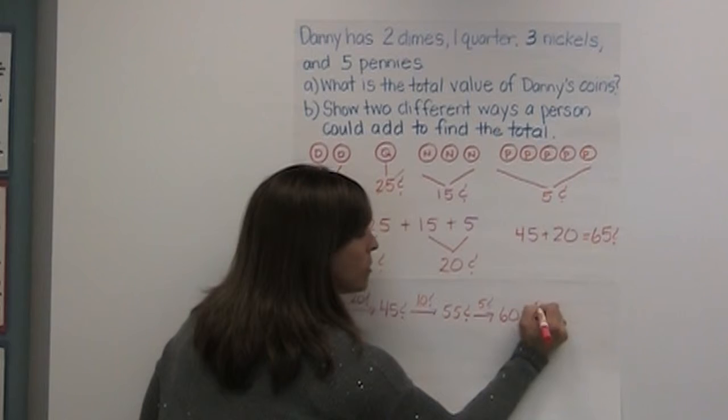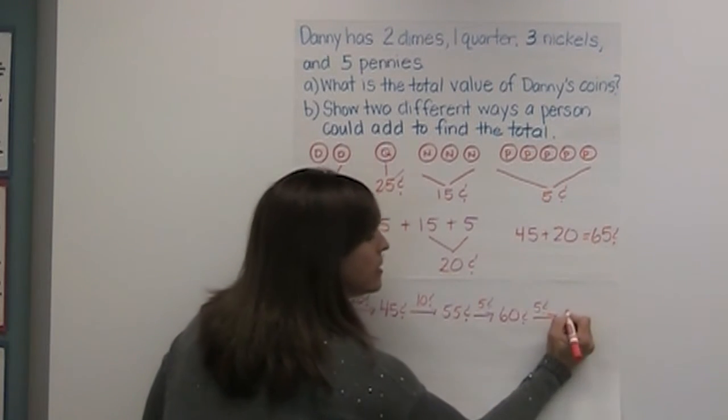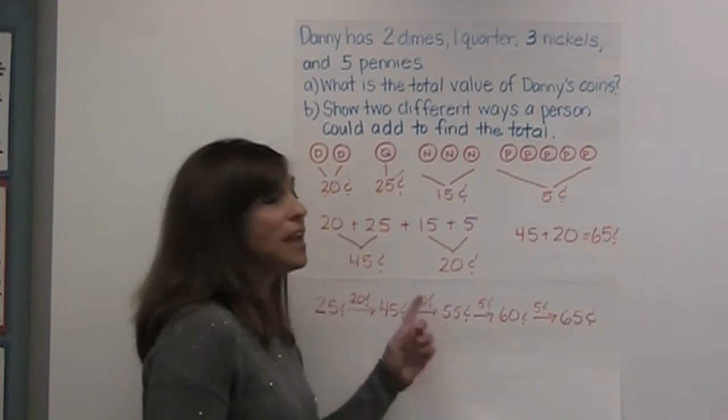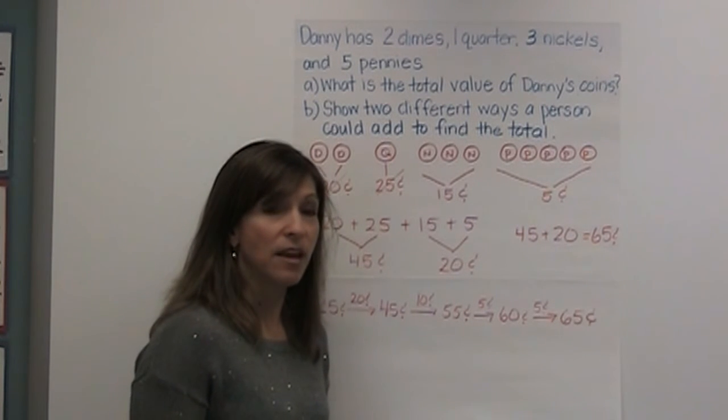And then I add five more cents for my pennies to give me my total of sixty-five cents. The arrows represent what a student could be thinking in their head. This is the last step before complete mental math.